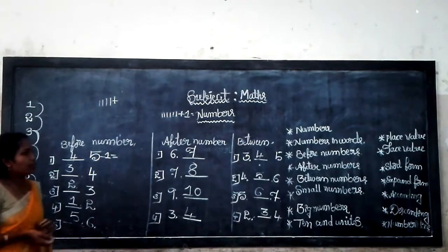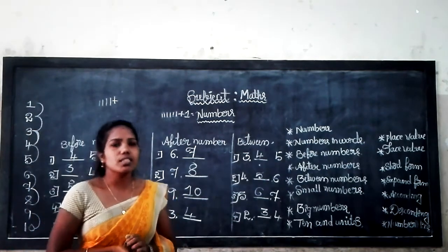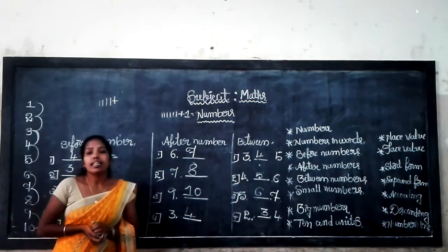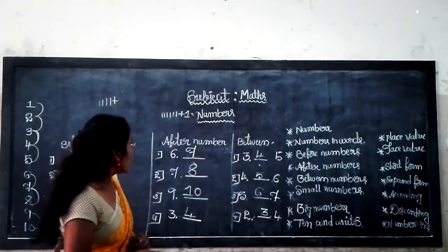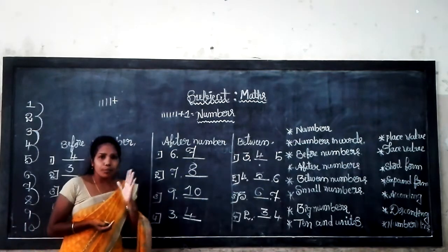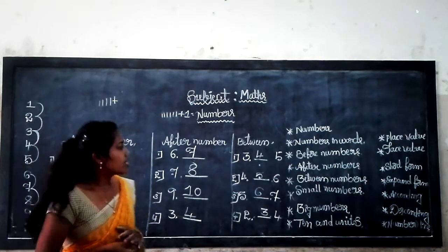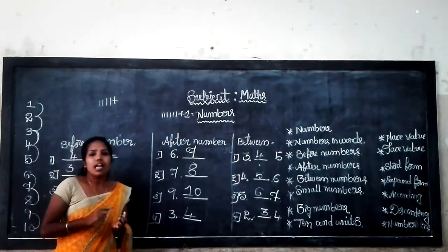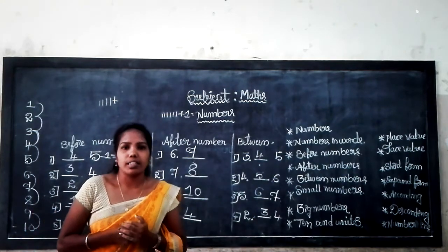In this class, we learned numbers from 1 to 10 — numbers in words, single digits and double digits, before number, after number, and between number. In the next class, we will learn numbers 11 to 20. Thank you.